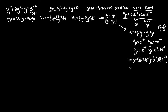Usually something cancels out. Distributing, that's e^(-2t) − te^(-2t) + te^(-2t), and indeed the te^(-2t) terms cancel. So the Wronskian simply equals e^(-2t).